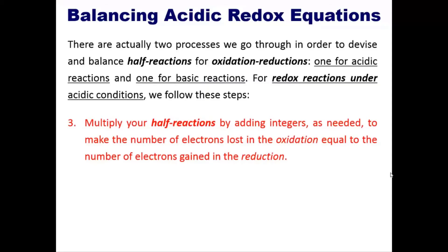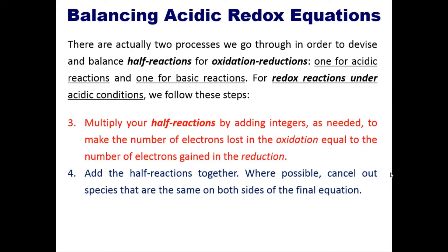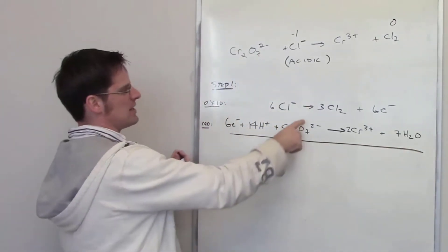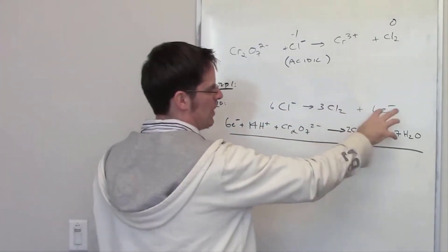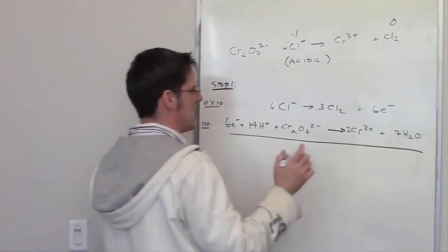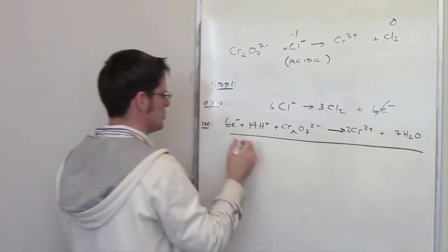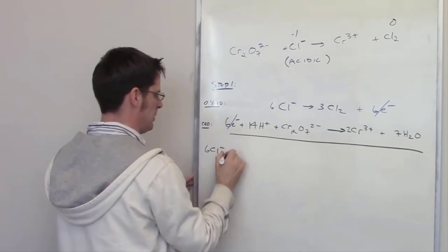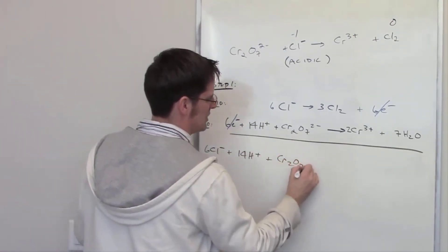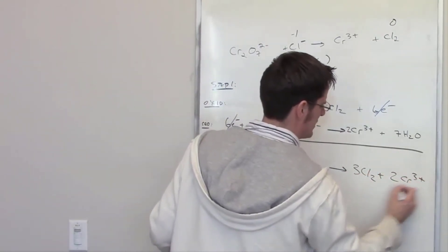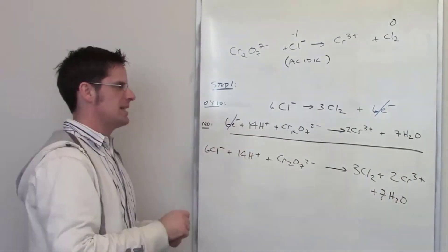The next step says to add the half reactions together and cancel out species that appear on both sides. Everything on the left sides combines into one grand left side, and everything on the right sides into one grand right side. The six electrons on the right of the oxidation reaction and the six electrons on the left of the reduction reaction cancel out. The combined equation is: 6 Cl⁻ + 14 H⁺ + Cr₂O₇²⁻ → 3 Cl₂ + 2 Cr³⁺ + 7 H₂O.